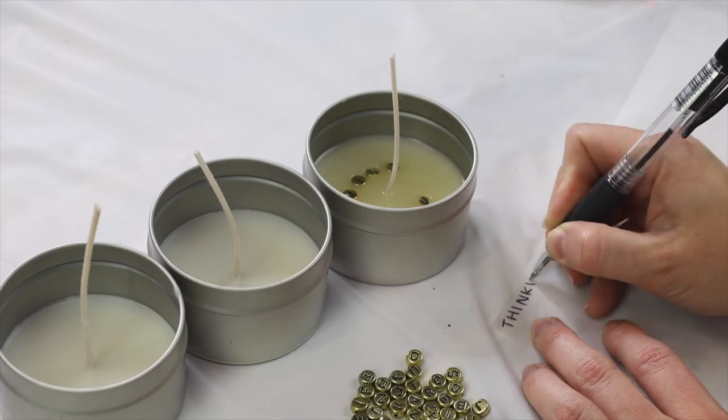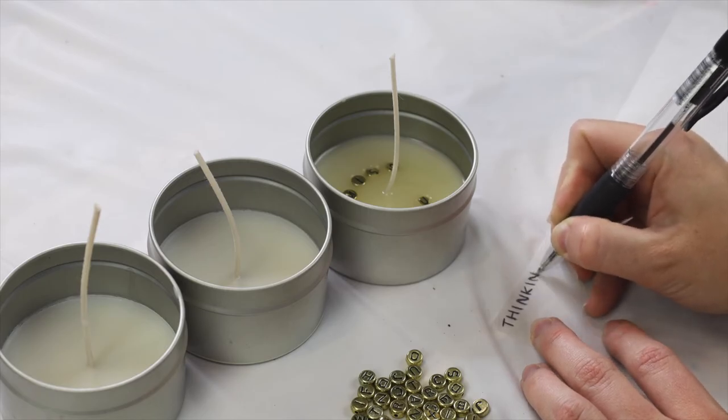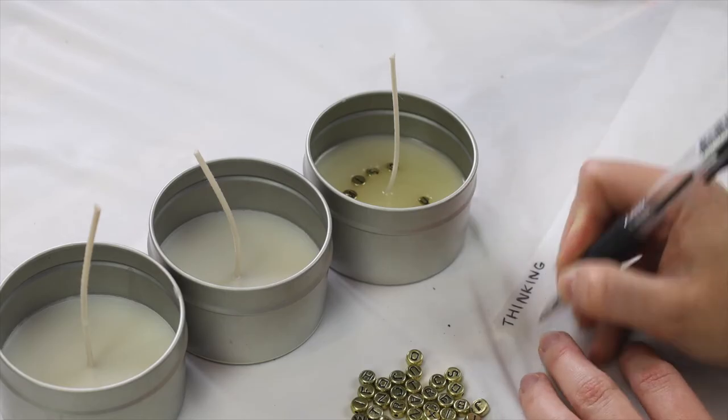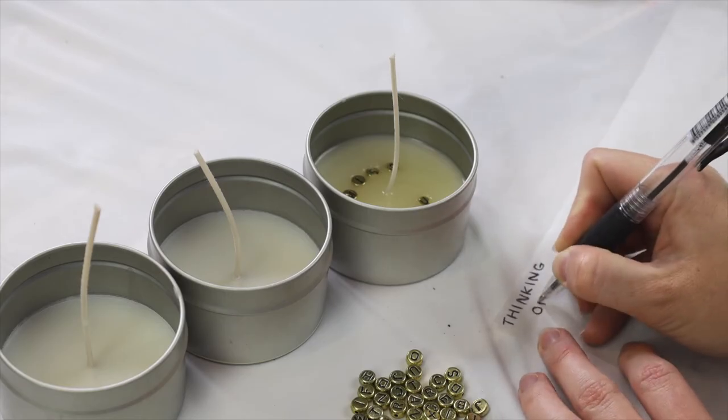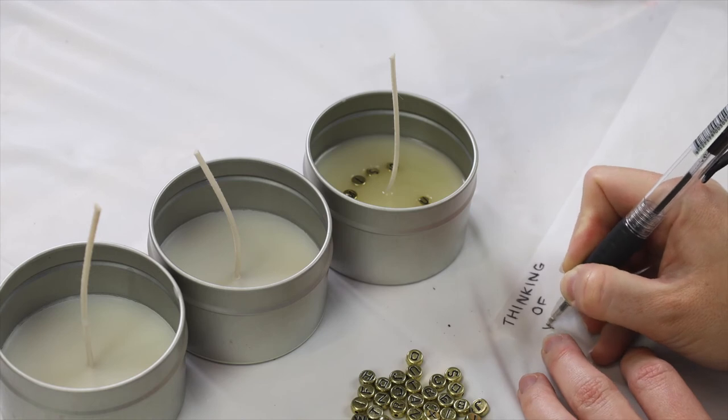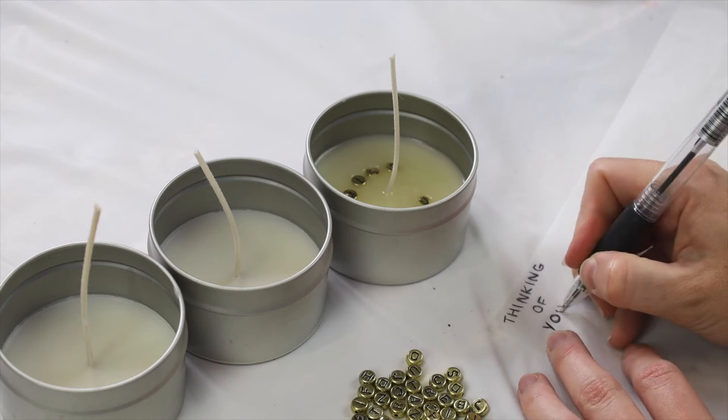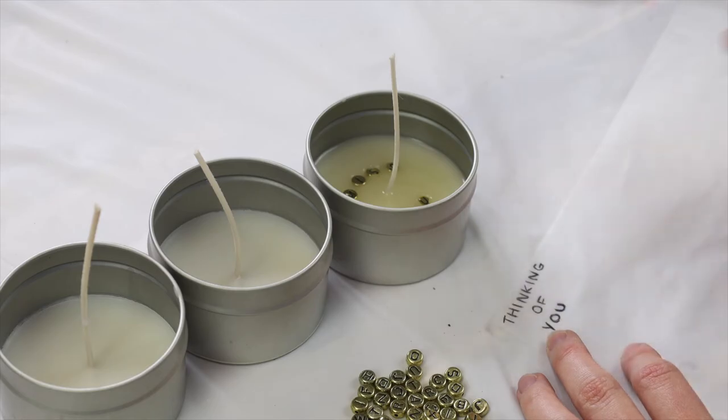I'm going to be cutting these up into little individual strips and placing them in, just once again to see if that changes anything with this. So this is just tracing paper. Now you can print on tracing paper. So obviously if you want to do really nice looking messages with fancy writing, you can always get tracing paper and put it through your printer and print out your message that way and then cut that out to fit into your candle.